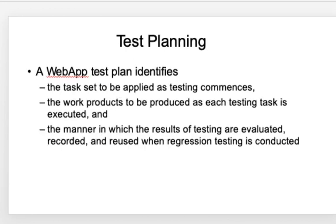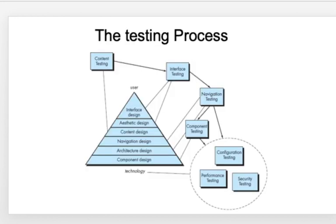In order to carry out any kinds of tests, it is important to do test planning. In a test plan, we identify the task set, the work products, and the manner in which results will be evaluated, recorded, and reused. The testing process is represented in the form of a pyramid — from component design to interface design — with different kinds of testing for each suitable design model.